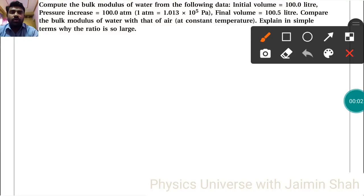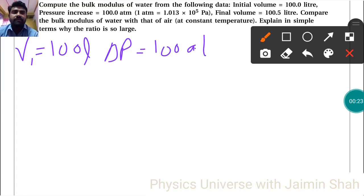Compute the bulk modulus of water from the following data: initial volume V1 equals 100 liters, pressure increase delta P is 100 atmospheres, and final volume...